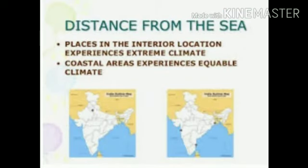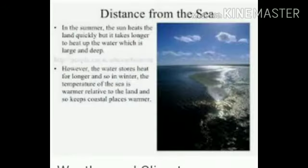Next, we will study about the distance from the sea. Land heats and cools more quickly than water because of the higher specific heat of water. This results in a greater range of temperature between days and nights, and between summer and winter, in continental interiors compared to coastal regions, where the cooling effect of the sea moderates the temperature day and night and throughout the year.